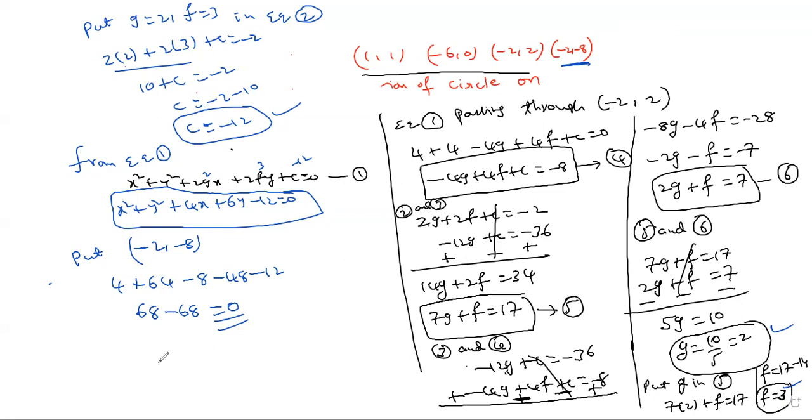Since we get 0, the given points are concyclic. This proves that all four points lie on the same circle. If you have any doubts, you can ask. Thank you.